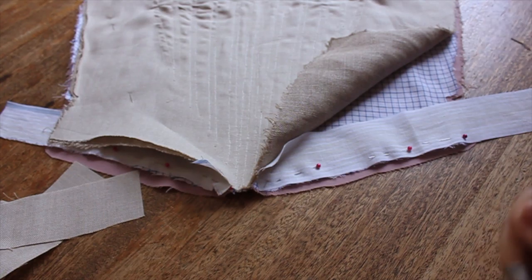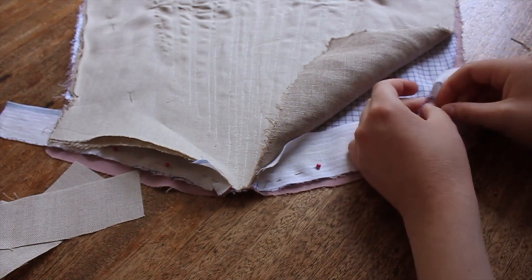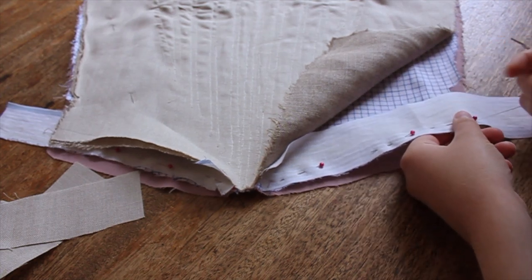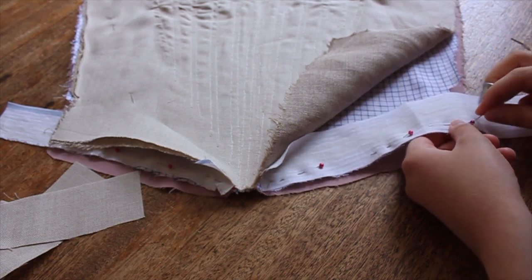To remedy this, I stitched some strips of linen to the bottoms of the panels, stitching some fine striped linen to the layer of checked linen and some medium weight natural linen to the layer of the same.